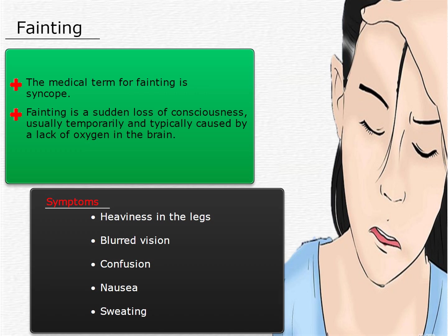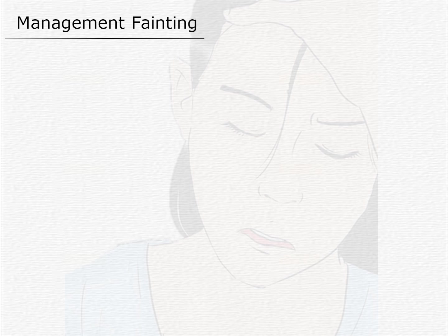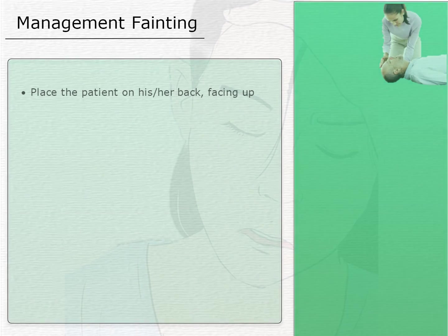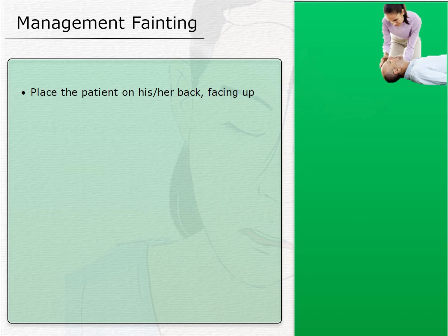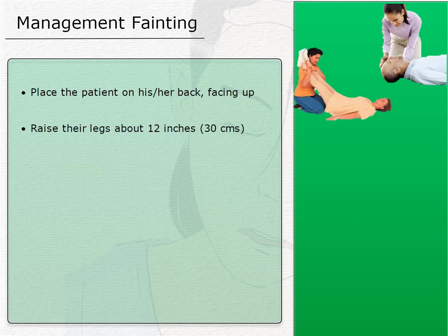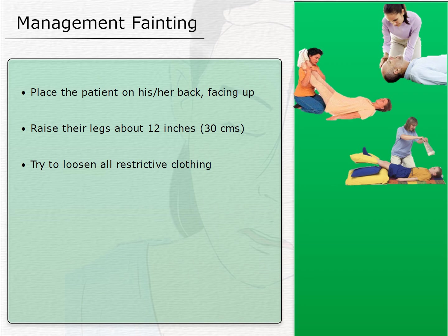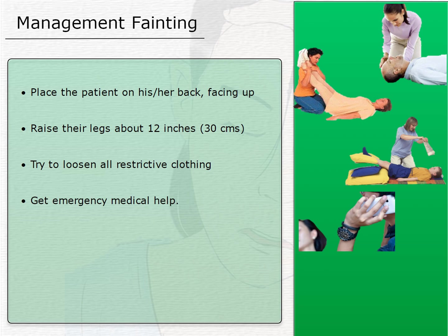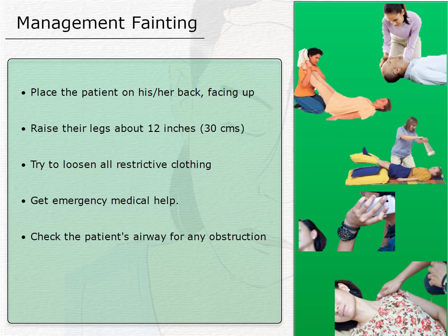The person should take all necessary precautions if facing symptoms of fainting. If you see somebody fainting, place the patient on his or her back, facing up. If the individual is breathing, raise their legs about 12 inches, or 30 centimeters, above the heart level to restore blood flow to the brain. Try to loosen all belts, ties, collars, and restrictive clothing. If they remain unconscious for more than about a minute, put the patient into the recovery position and get emergency medical help, and check the patient's airway for any obstruction.